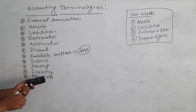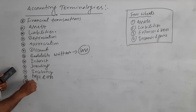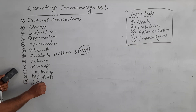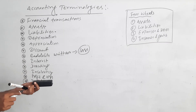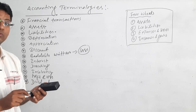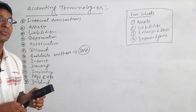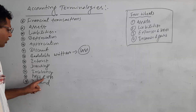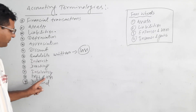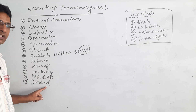Dividend is the amount paid to investors or shareholders on the basis of profit. More profit means more dividend; no profit means no dividend.